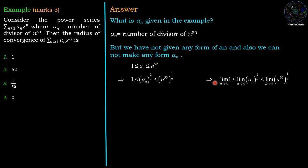Now, if we apply limit then limit n tends to infinity 1 <= limit n tends to infinity a_n^(1/n) <= limit n tends to infinity (n^50)^(1/n).